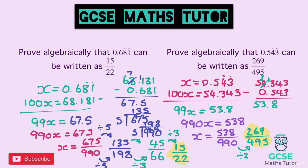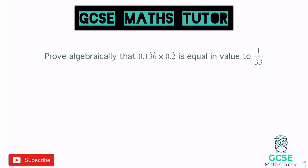Let's look at something else to finish. This question says: prove algebraically that 0.136 recurring (with the 3 and 6 recurring) multiplied by 0.2 recurring is equal to 1 over 33. You can't multiply these without a calculator unless you turn them into fractions first. Pause the video, have a go, and we'll go over the answer.